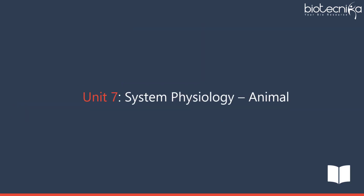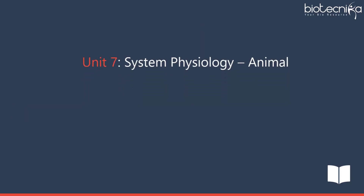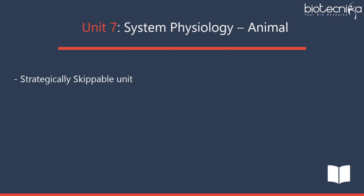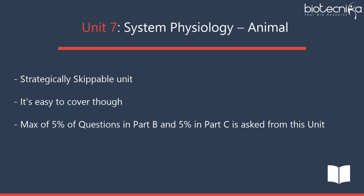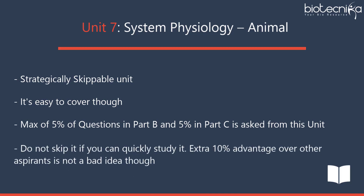Unit 7 – System Physiology Animal is a strategically skippable unit, though it is easy to cover. A maximum of 5% of questions in Part B and 5% in Part C are asked from this unit. Do not skip it if you can quickly study it, as an extra 10% advantage over other aspirants is not a bad idea.